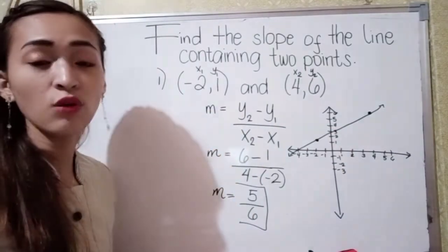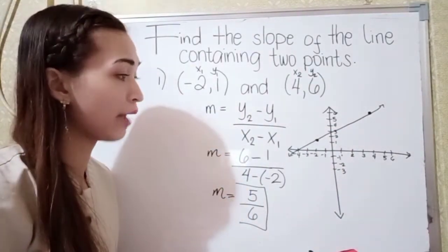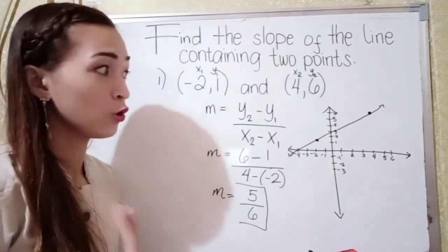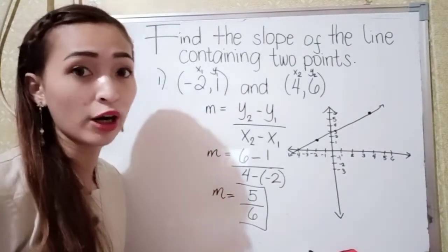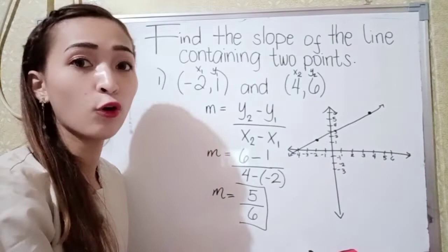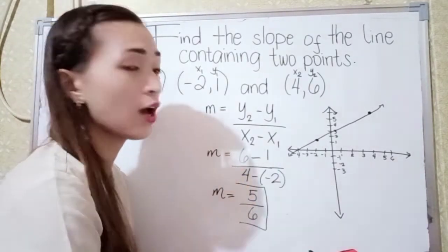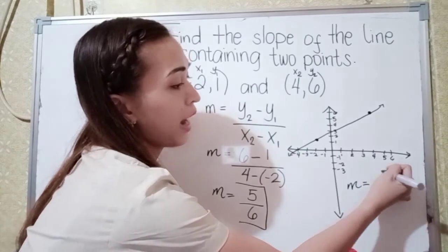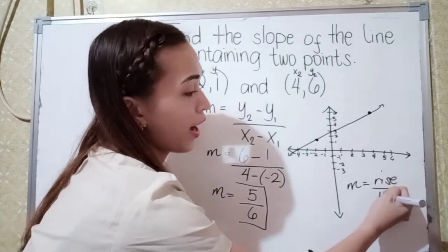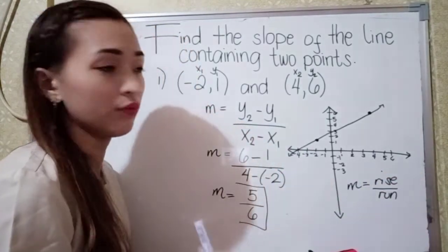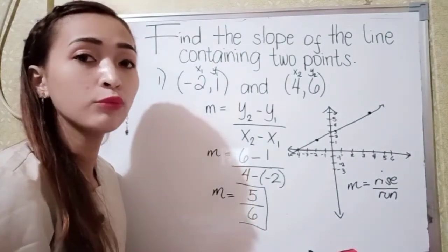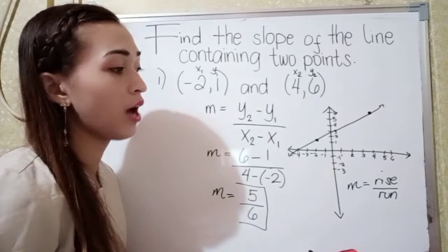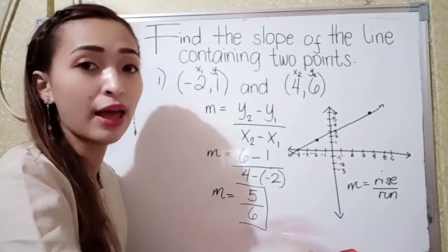If you want to know the slope of the line without the formula, what you're going to do is just count units upward or downward, and then left or right. We have the formula which is slope equals rise over run. The rise means you're counting upward or downward, and the run means you're counting from left to right.